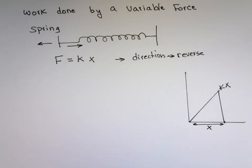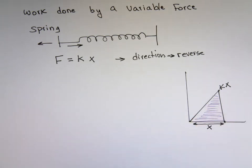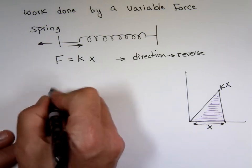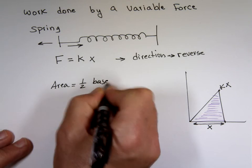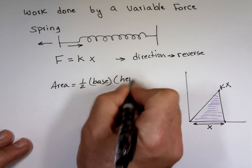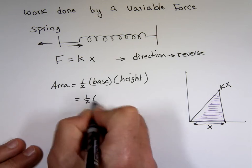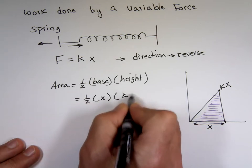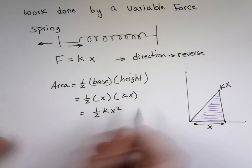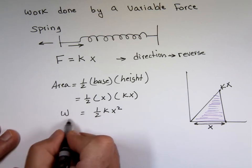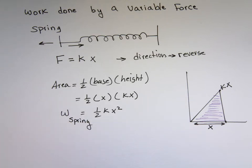Let me highlight that. If I was to highlight this area, what is that area equal to? We know the area equals one half base times height, for a triangle. My base here is x and my height is kx, so when you do the equation, that's one half kx squared. That's the area. The area happens to be the work done by a spring.